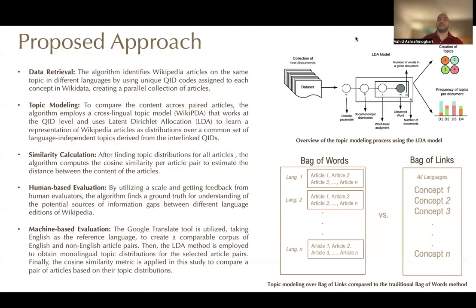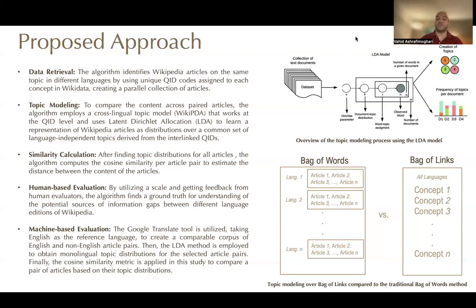Our algorithm finds a ground truth for understanding the potential sources of information gap between different language editions. Finally, using Google Translate as a machine translation tool and taking English as a reference language to create a comparable corpus of English and non-English article pairs. Then, using a traditional topic modeling method to obtain monolingual topic distributions for selected article pairs, and calculating cosine similarity to compare pairs of articles based on their topic distributions.